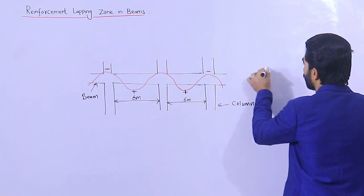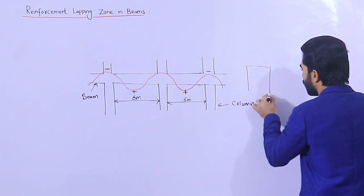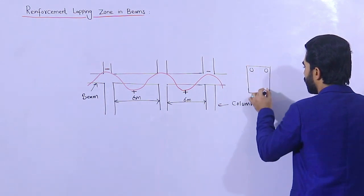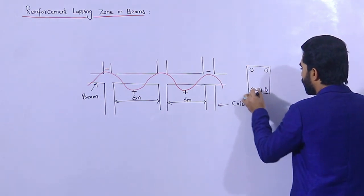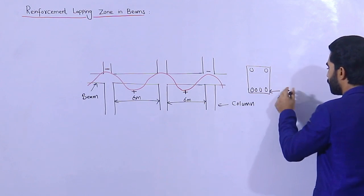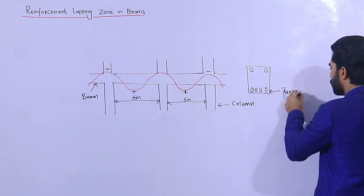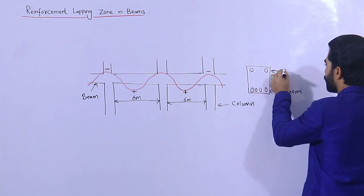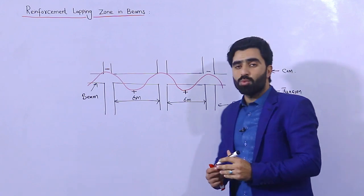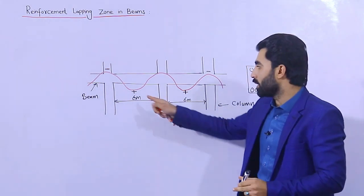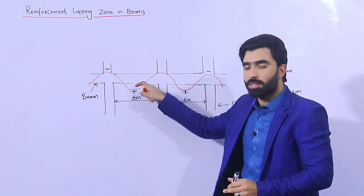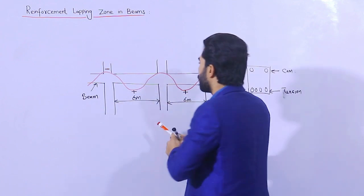As you can see, this is its section. This portion is called the compression zone, and this is the tension zone. Remember guys, where we have positive bending moment — as you can see at the middle — we have maximum tension when we apply the load on the top of the beam.